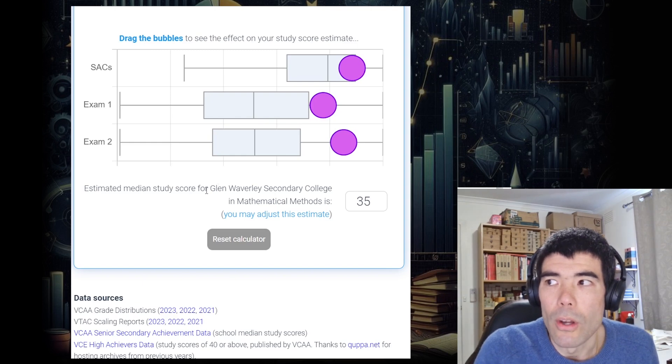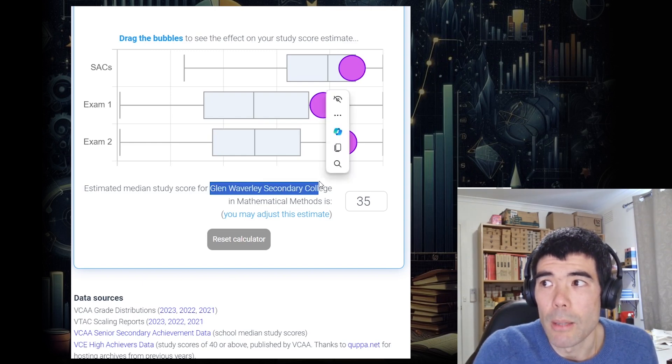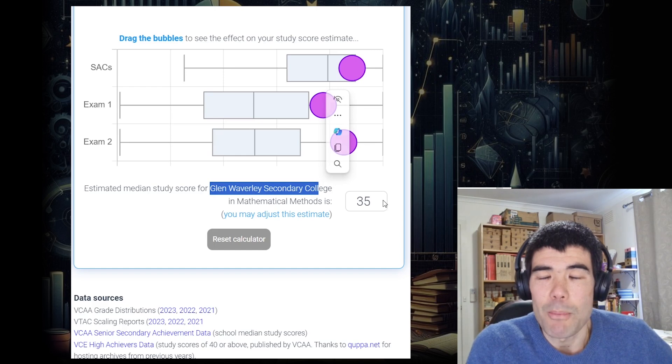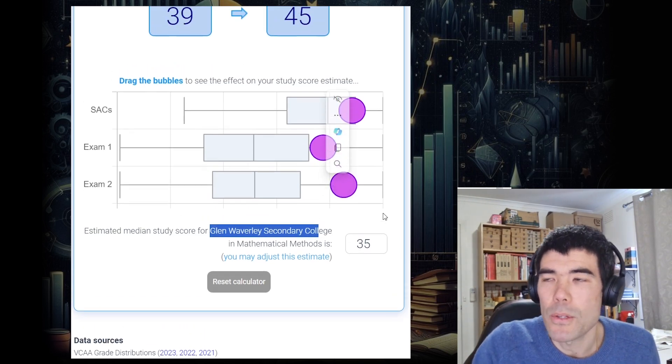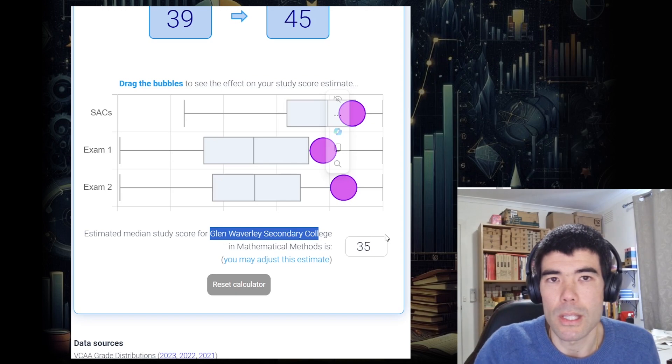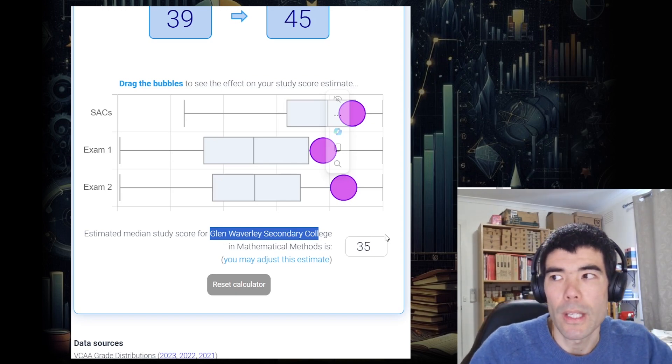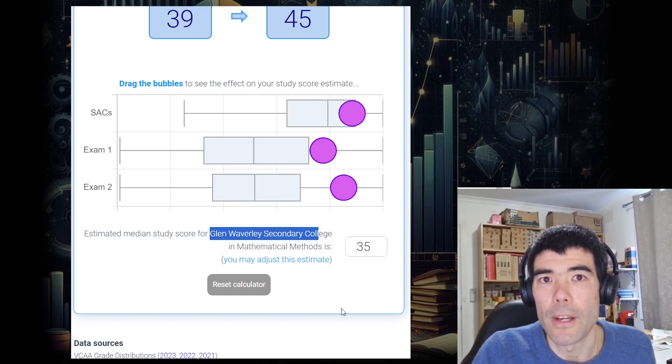Obviously, I don't know how the students at Glen Waverley Secondary College are going to do in this exam. It hasn't happened yet. But from past years results, we can have some idea. It's harder for small schools, because there's less students and it's likely to change more every year. But for big schools, you can have a fair idea.